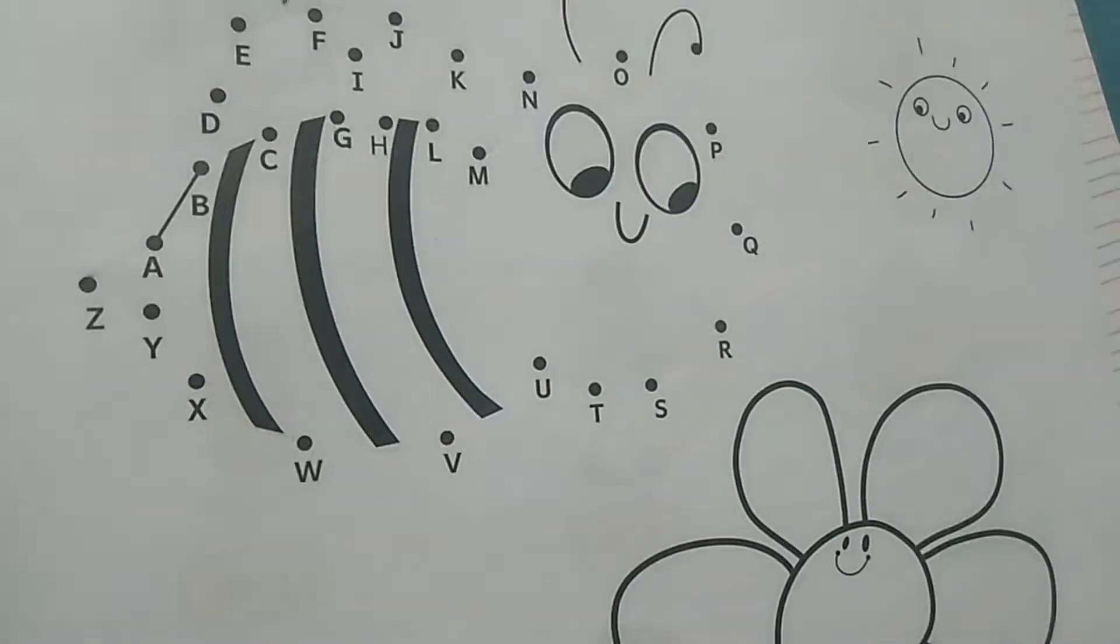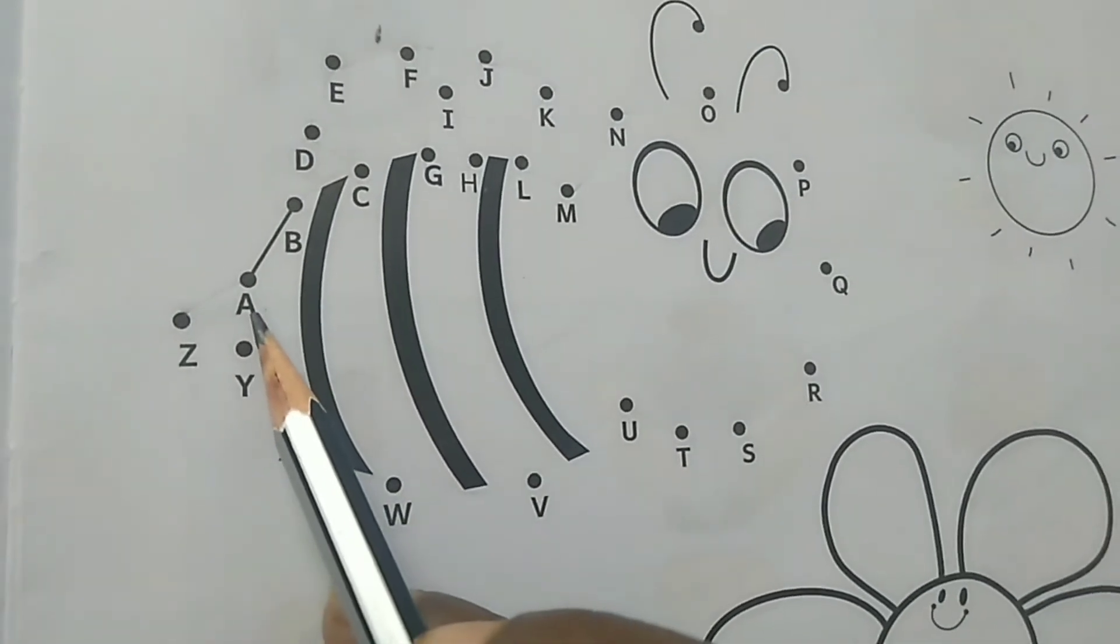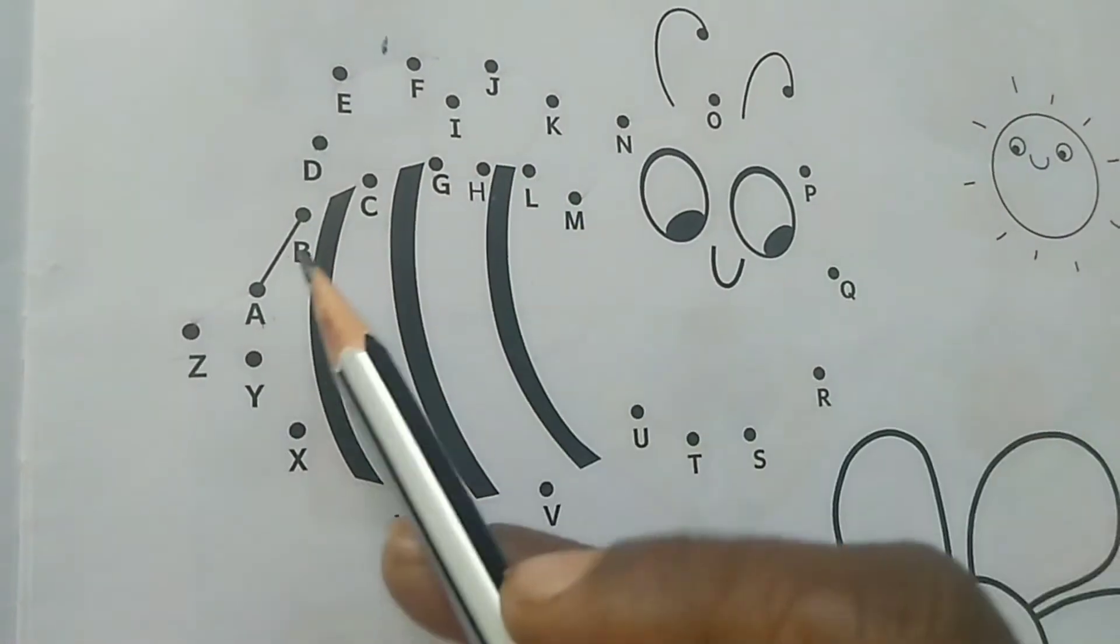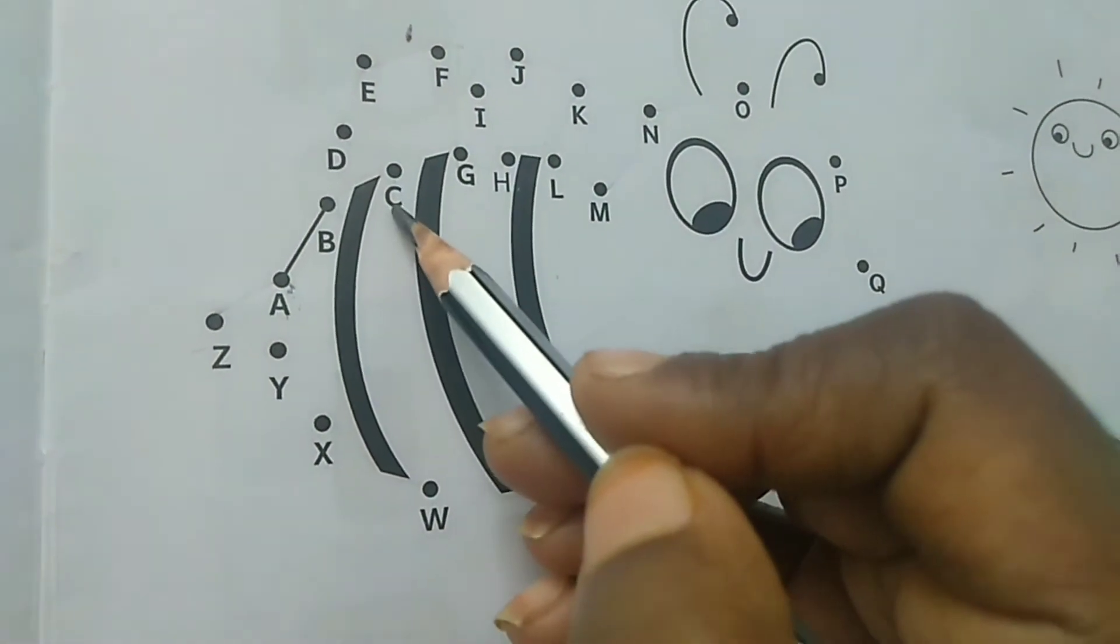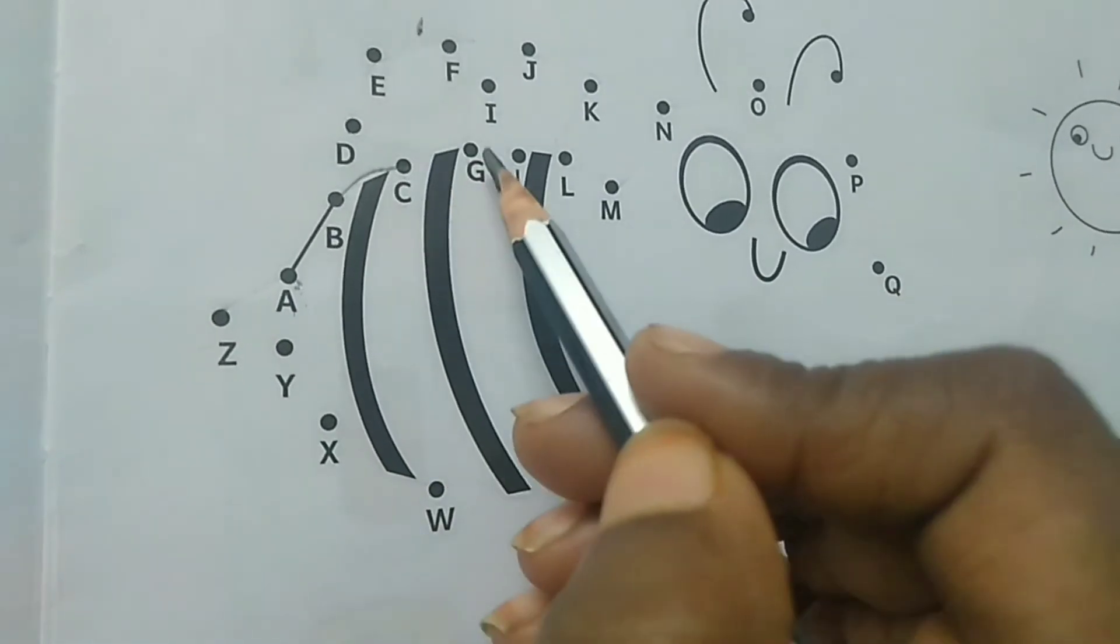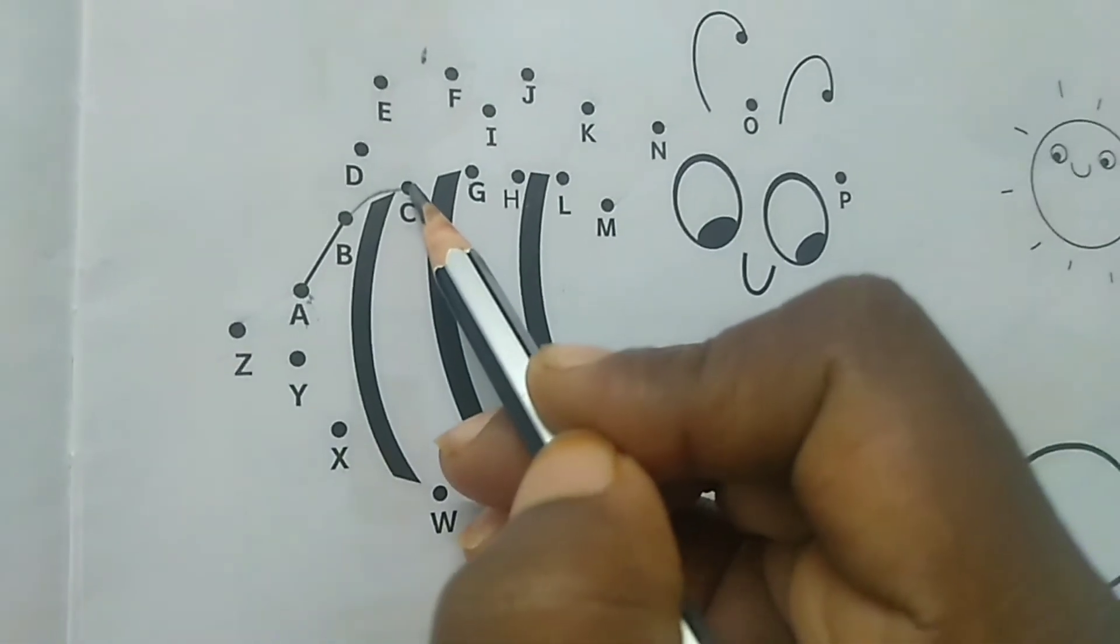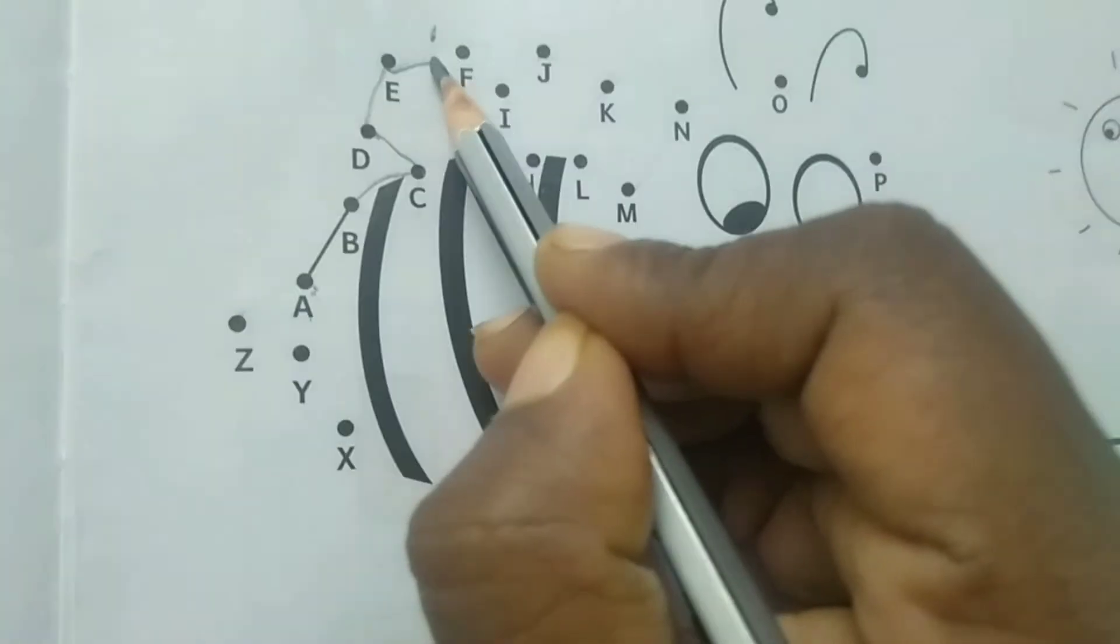You have an activity here - join the dots and color the picture. Before that, start with the date 1-10-2021 Friday, F-R-I-D-A-Y. Children, see you have some alphabets given here. All the letters start from capital A to capital Z. You have to go along. See capital A, B, and then where is C? C is here. You go C. Then you are not going to join here. You are going to join D according to the alphabetical order. A, B, C, D, and then E, F.